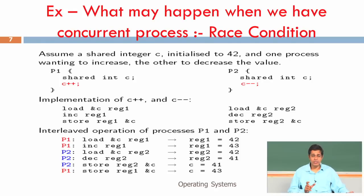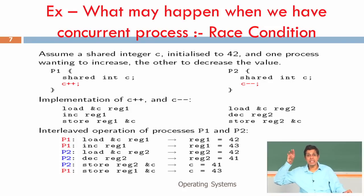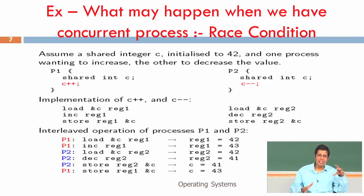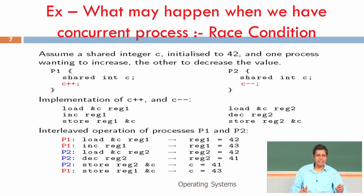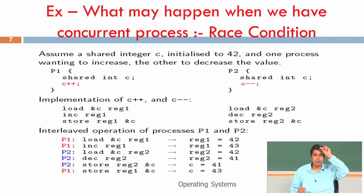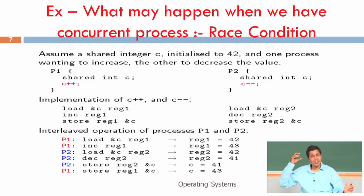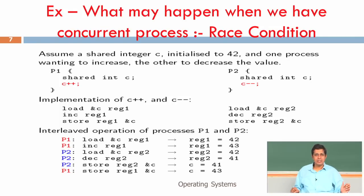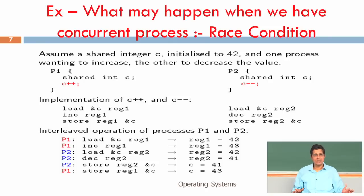What is the solution? When P1 is executing its three instructions, P2 should not be allowed to execute its corresponding three instructions, and vice versa. If I had done C++ completely and then C--, or C-- completely and then C++, this problem would not have happened. I need to ensure the three assembly instructions of P1 are fully finished before P2's three instructions start, or vice versa.